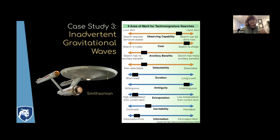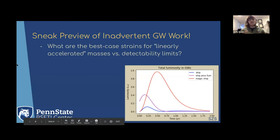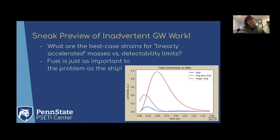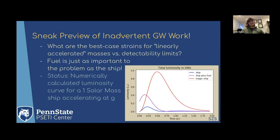So those are three case studies. If anyone is more interested in this gravitational wave project, it's something I'm working on right now. I was hoping to present for this conference, but projects take longer than you think sometimes. I'm looking at characterizing the best case strains for linearly accelerated masses versus the current detectability limits of instruments like LIGO or LISA. One thing I've discovered so far is that the fuel is just as important to the problem as the ship, because both of them are mass energy that are moving. So far, I have been able to numerically calculate the luminosity curves for a solar mass ship accelerating at g.